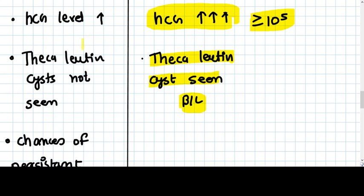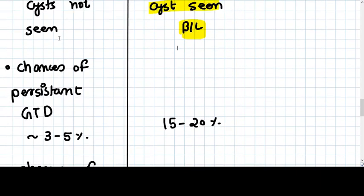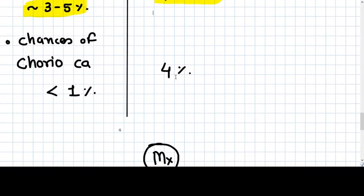What are the chances of persistent GTD? It is only 3 to 5% in case of partial mole, but in case of complete mole, it is 15 to 20%.